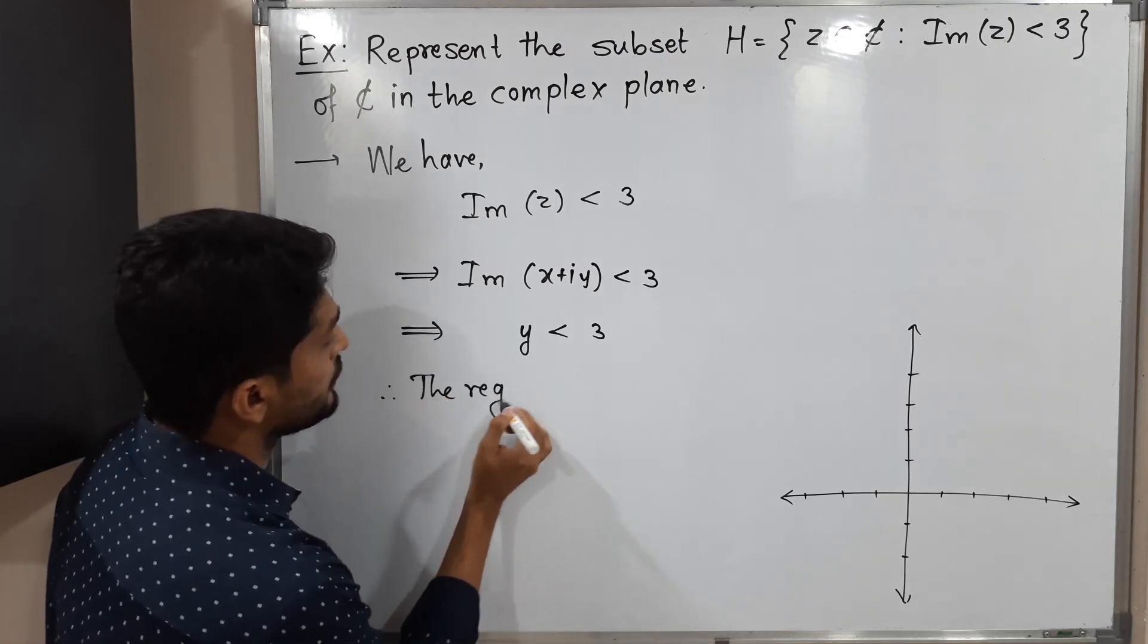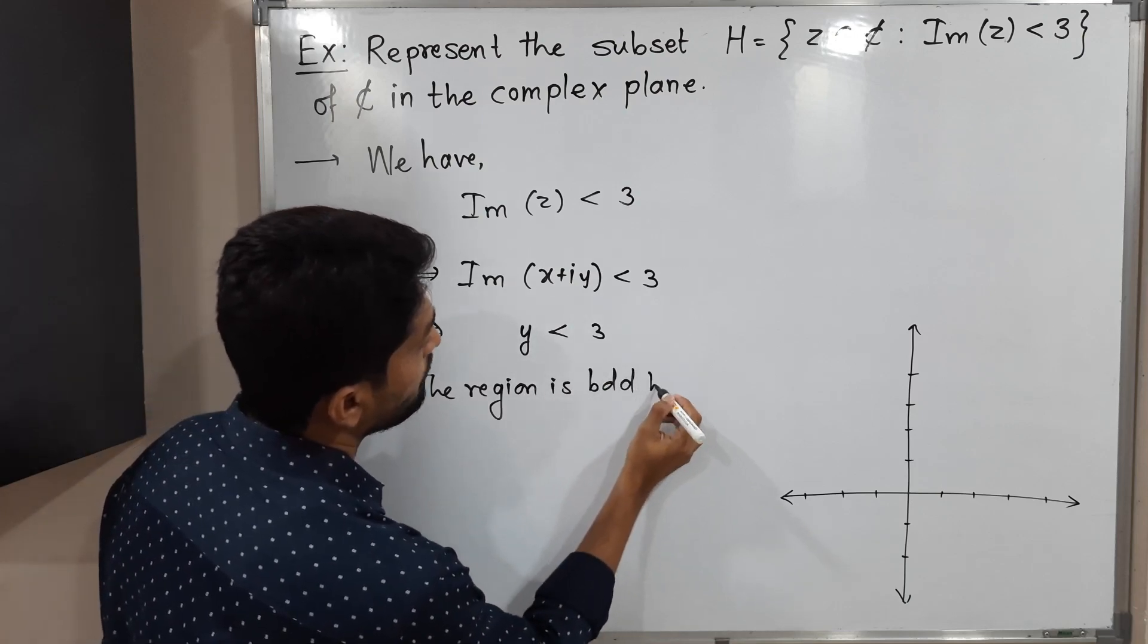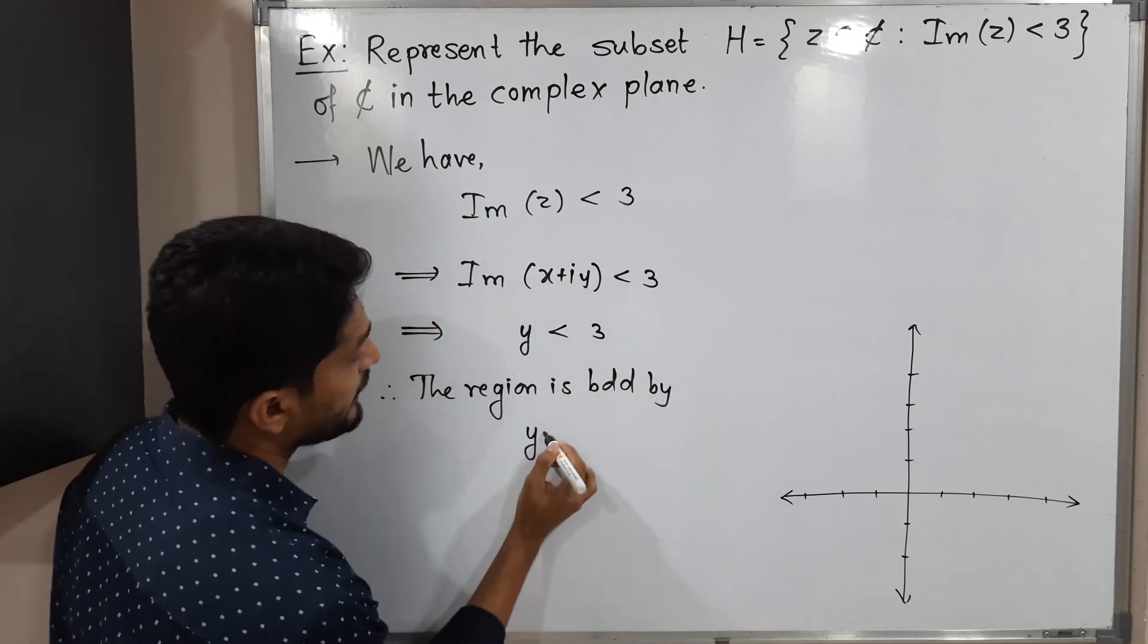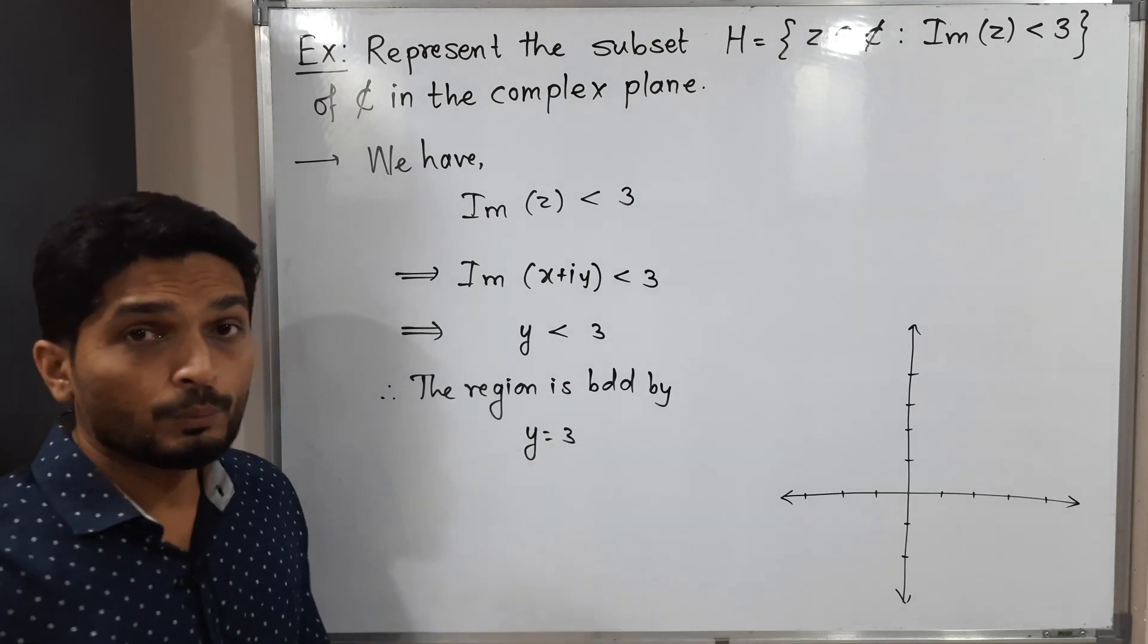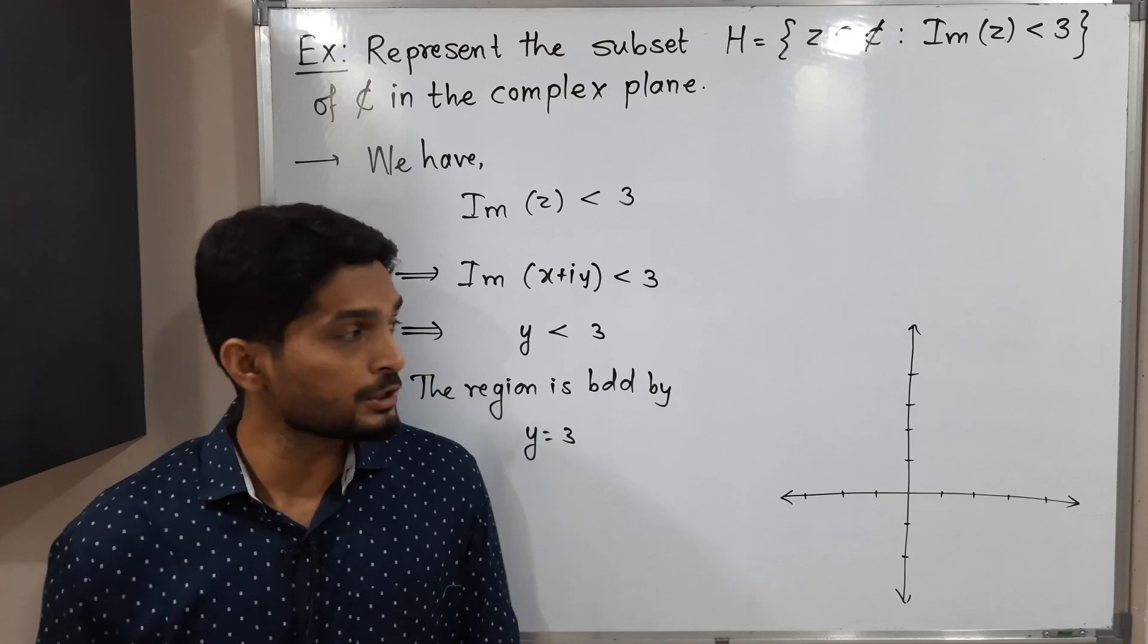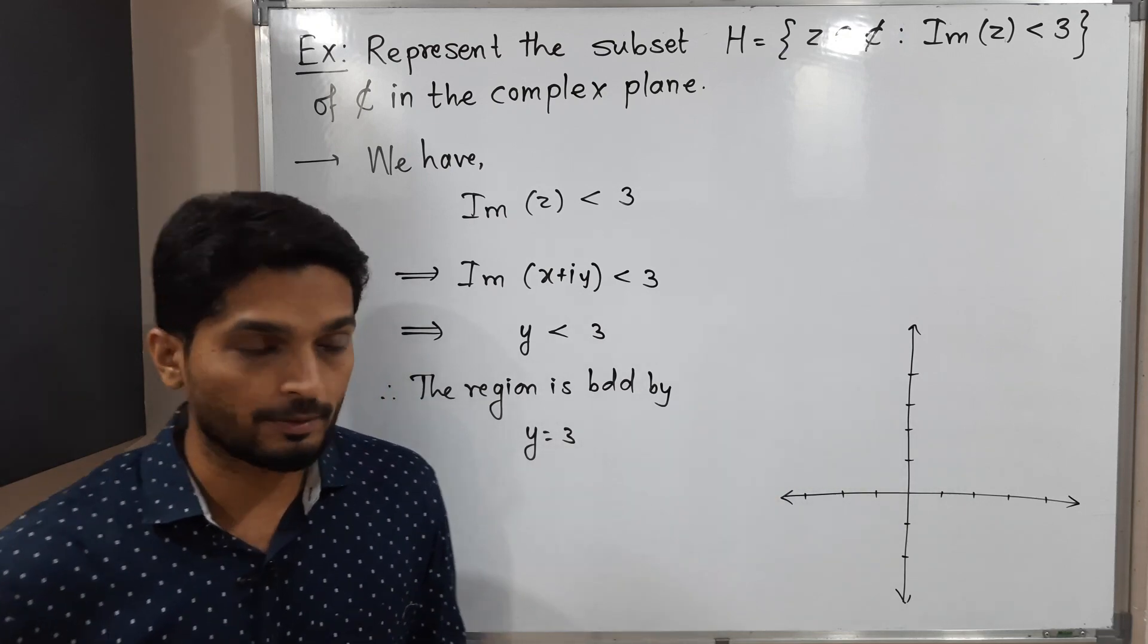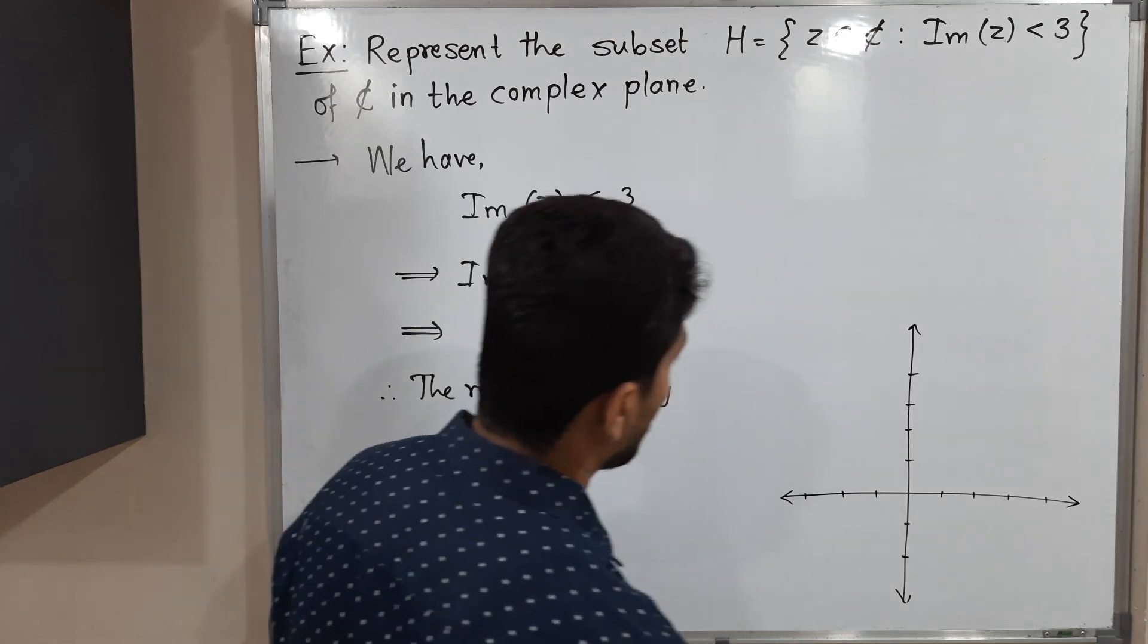The region is bounded by—I will replace inequality by equality—y equals 3. So we know that y equals 3. This is equation of line which is parallel to x-axis and passes through this point (0,3). So let me draw that line.